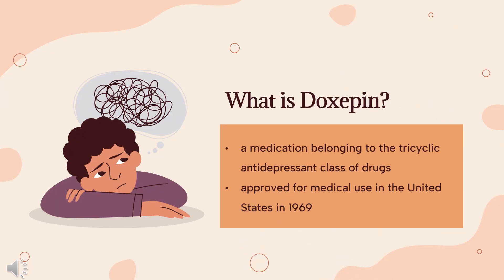Doxepin is a medication belonging to the tricyclic antidepressant class of drugs used to treat major depressive disorder, anxiety disorders, chronic hives, and insomnia. For hives, it is a less preferred alternative to antihistamines. It has a mild to moderate benefit for sleeping problems. Doxepin was approved for medical use in the United States in 1969, and is available as a generic medication. In 2020, it was the 252nd most commonly prescribed medication in the United States, with more than 1 million prescriptions.